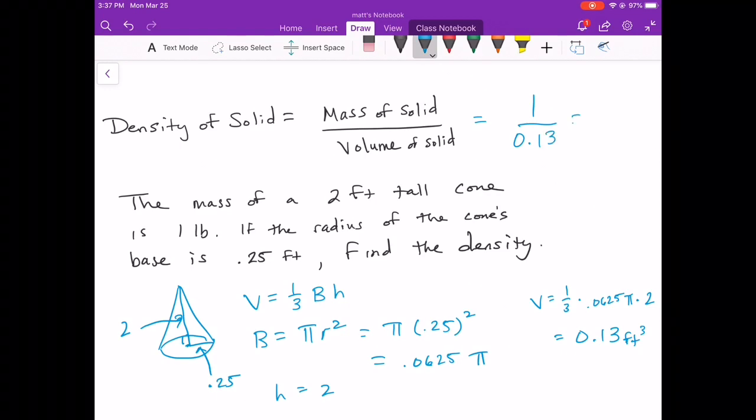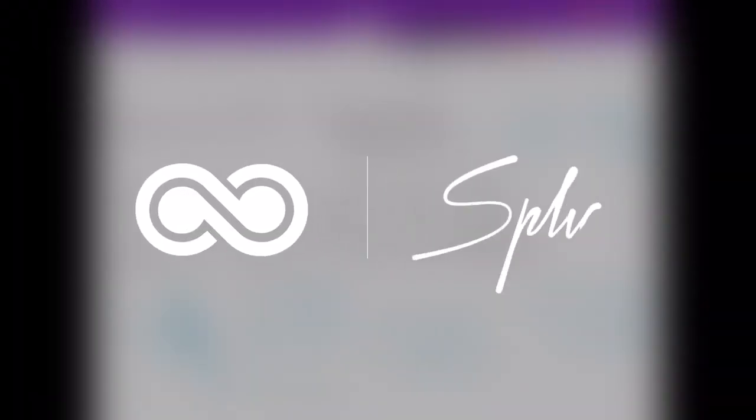So one divided by 0.13. And we get 7.69. And then make sure you get your units written correctly. Pounds per foot cubed. So that's your mass over volume units there.